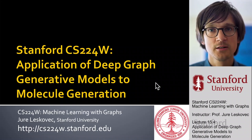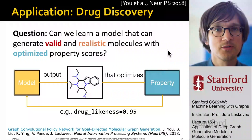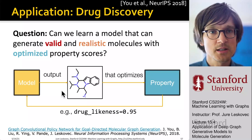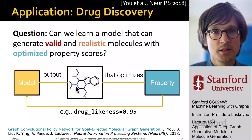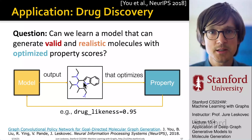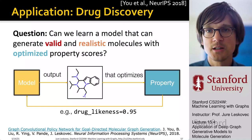The question is: can we learn a model that can generate valid and realistic molecules that optimize some property? The model is going to output a given molecule. This molecule has to be valid — it has to obey the rules of chemistry. It also has to be realistic; it has to look like a drug. And we want it to optimize a given property, for example drug likeness or solubility. The paper and method I'm going to talk about is called Graph Convolutional Policy Network for Goal-Directed Molecular Graph Generation.